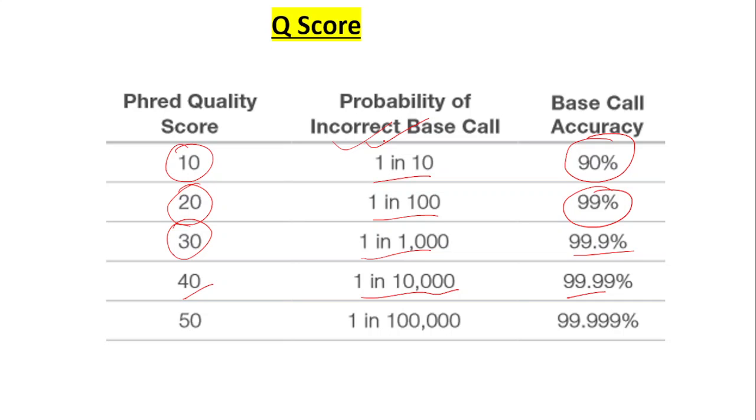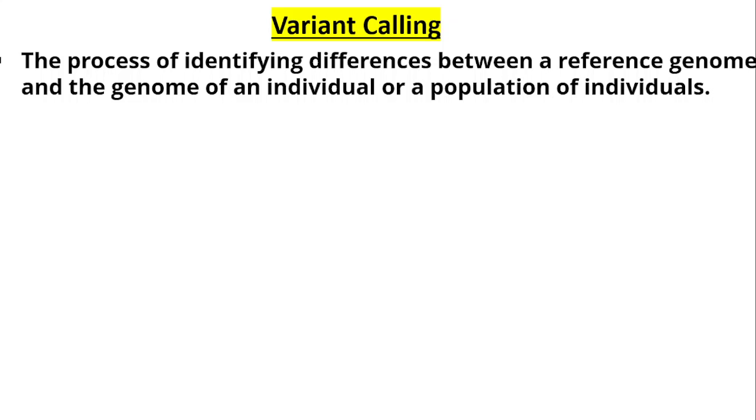A score of 40 means 1 in 10,000 and 99.99% base call accuracy. And finally, Phred quality score of 50 means the probability of an incorrect base call is 1 in 100,000 bases, which means base call accuracy of 99.999%.